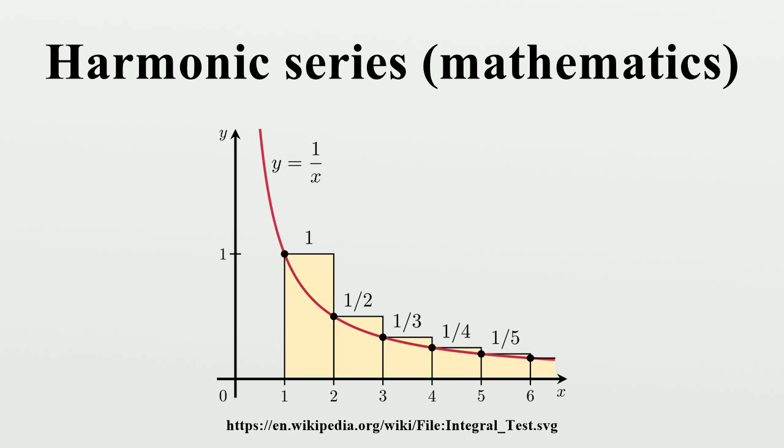The depleted harmonic series where all of the terms in which the digit 9 appears anywhere in the denominator are removed can be shown to converge and its value is less than 80. In fact, when terms containing any particular string of digits are removed the series converges.